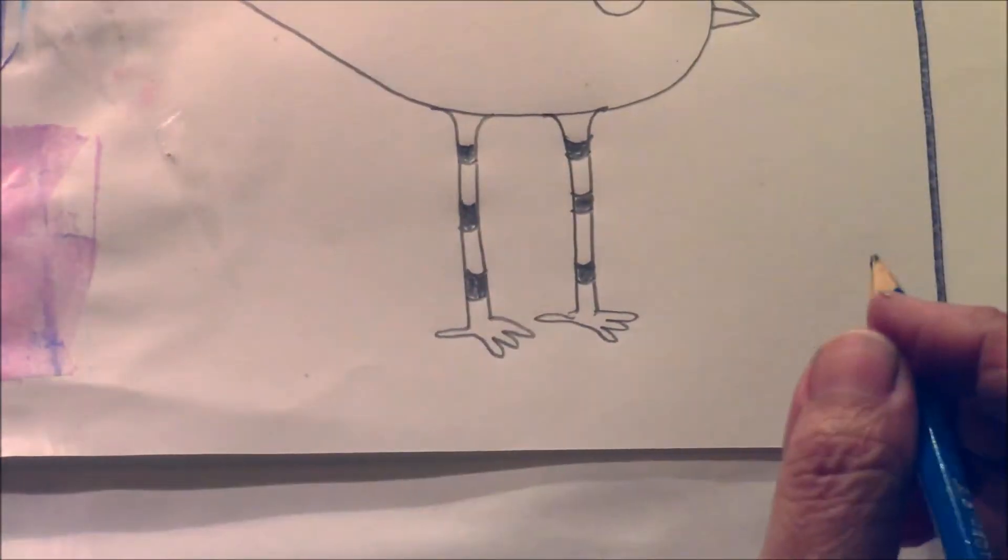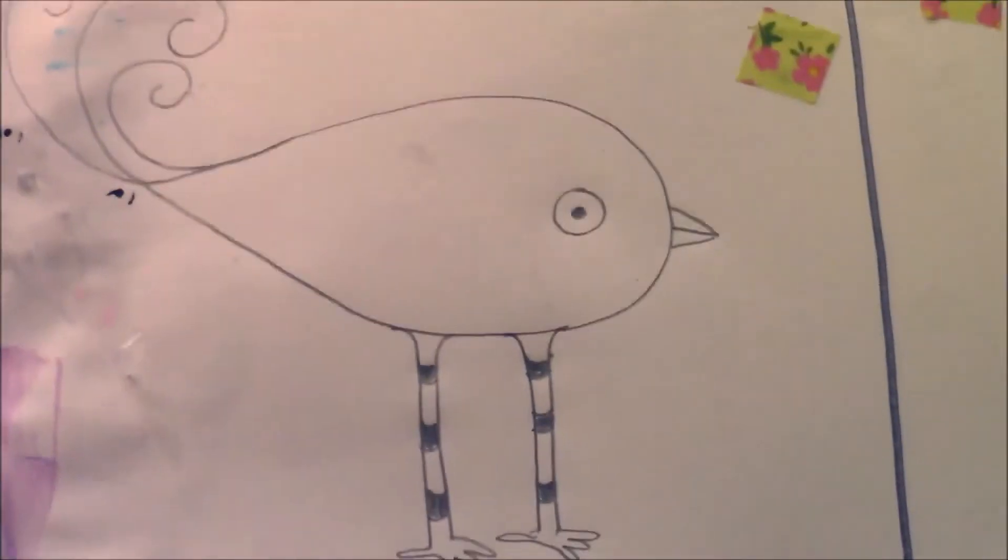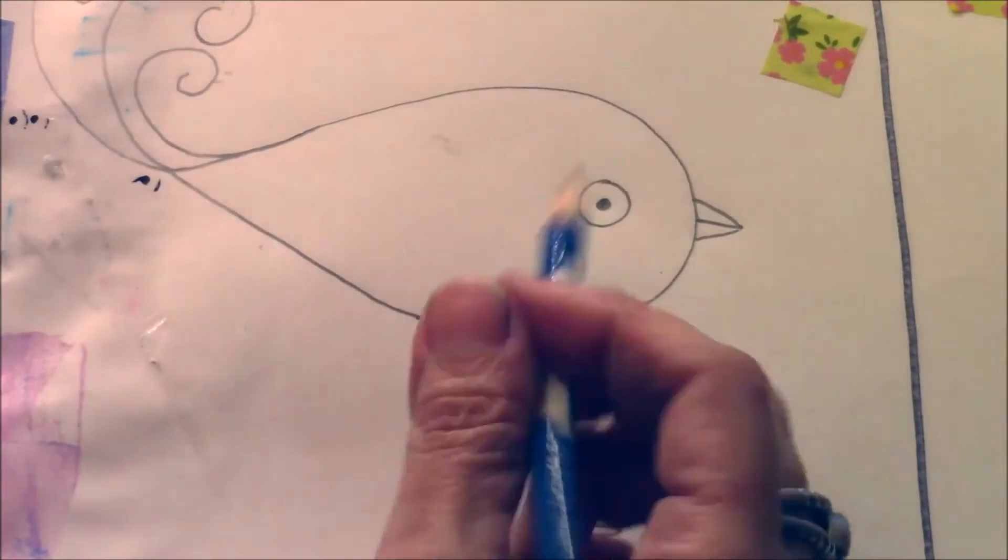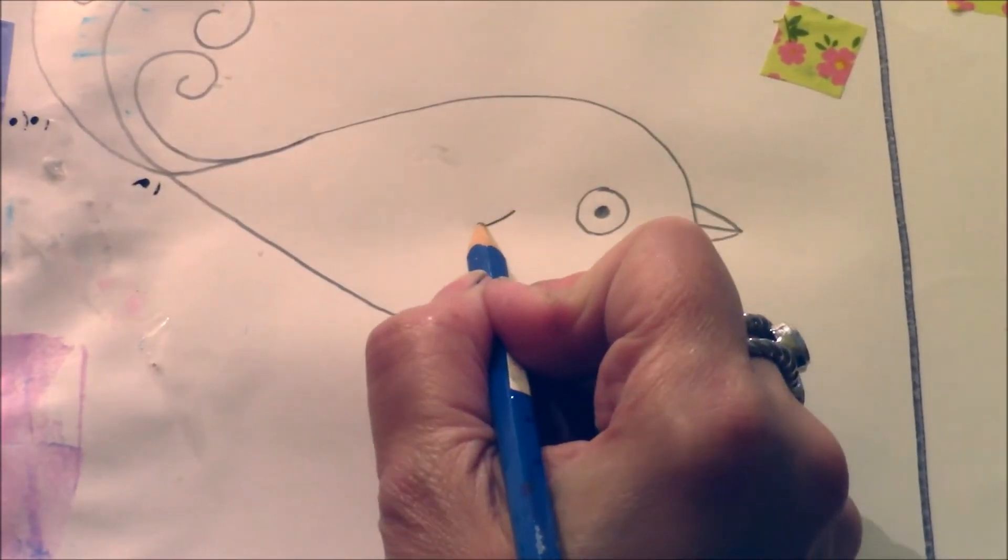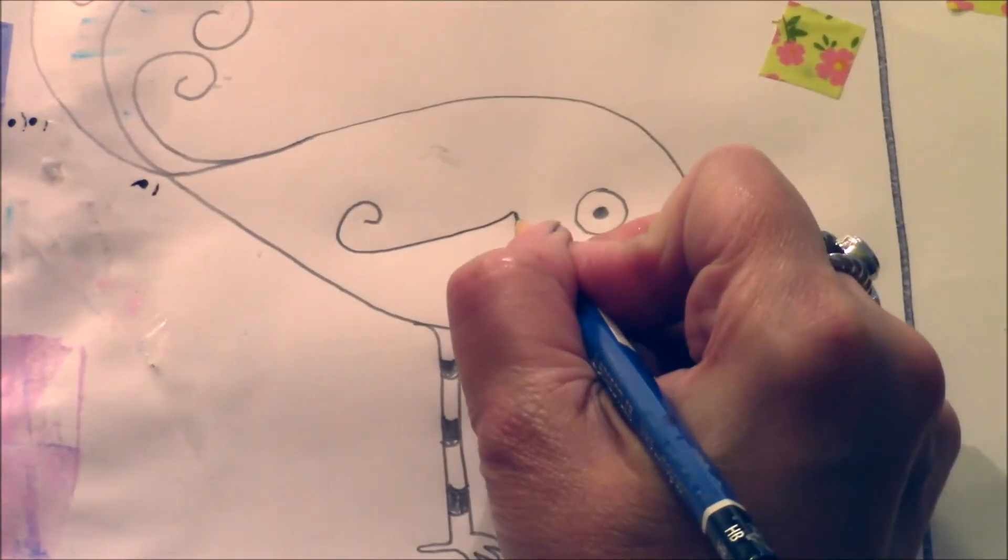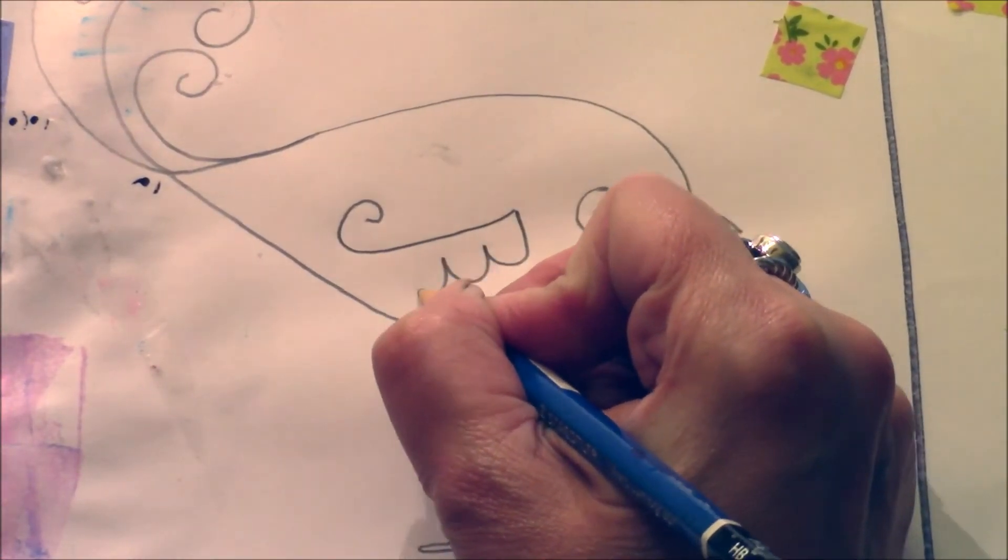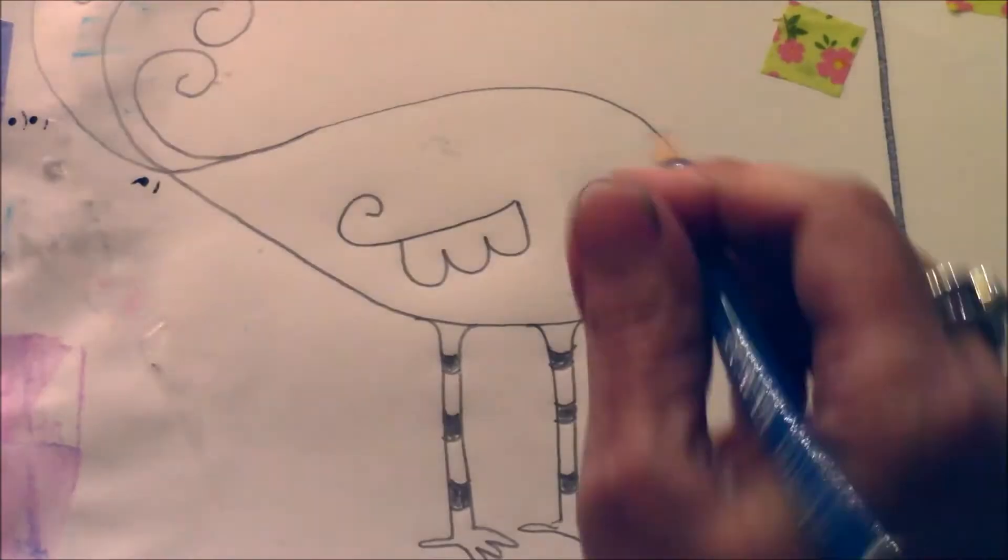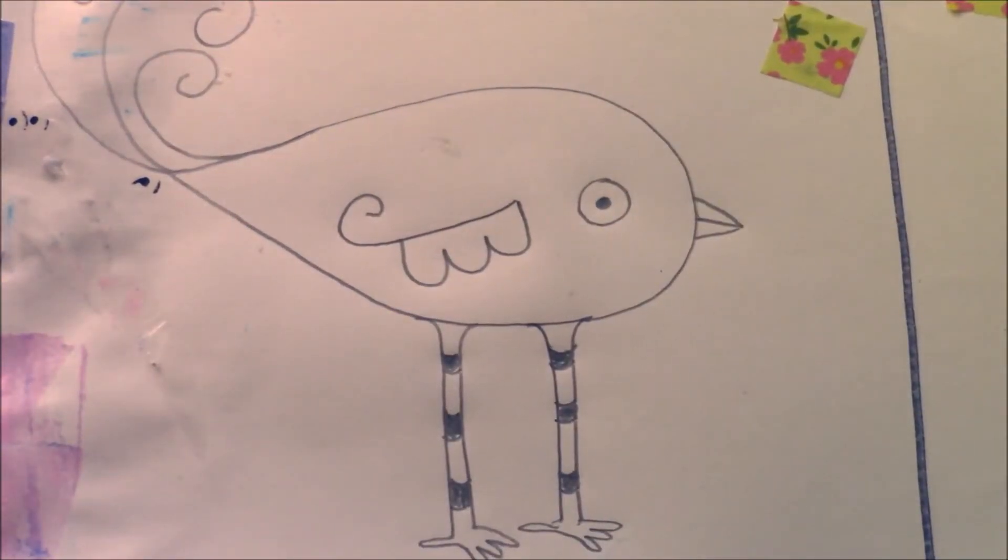And then I'm going to do the feather. I'm going to do the side feather. So I'm going to come in and I'm just going to do a curve first. And I come in and just do little curves like that, almost like you're doing a backwards E. And there you have it.